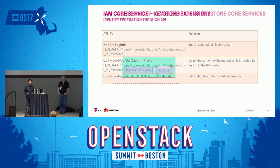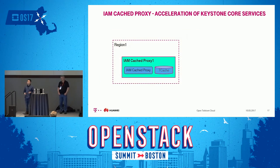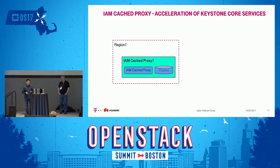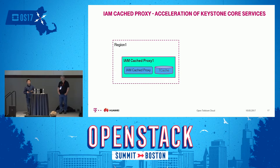Our cached proxy is for routing and accelerating Keystone services. We deploy one cached proxy per region, and each cached proxy includes several application instances, a load balancer, and a database we call tcache. With the tcache we can cache essential credentials at the region level, so requests do not need to go to the central Keystone service to get information.